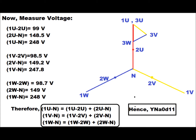For the yellow phase, the voltage between 1V and 2V comes to 98.5 V, between 2V and N comes to 149.2 V, and between 1V and N comes to 247.8 V. For the blue phase, the voltage between 1W and 2W comes to 98.7 V, between 2W and N comes to 149.4 V, and between 1W and N comes to 248 V.